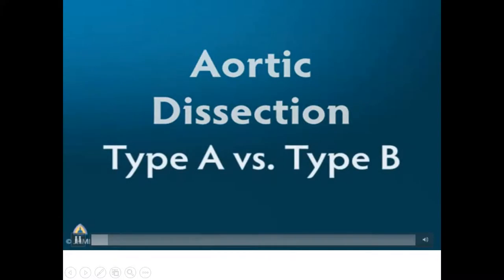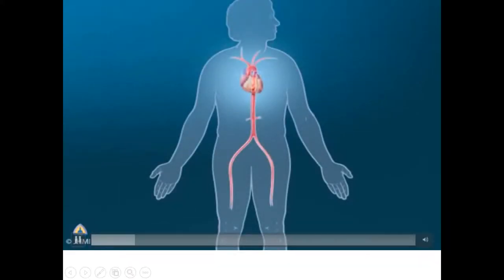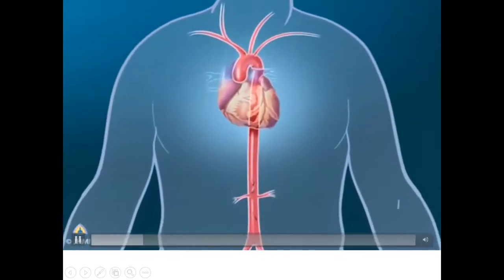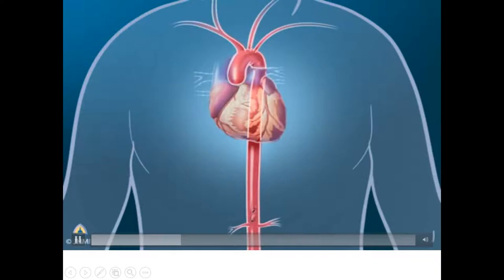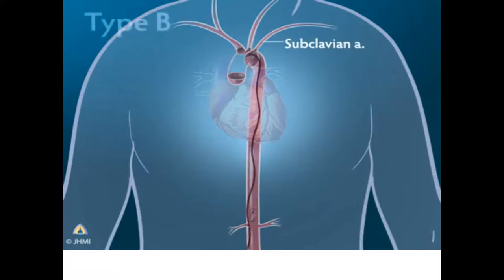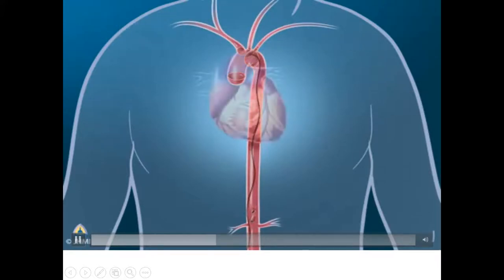This important section will explain Type A versus Type B aortic dissection. You can see the heart and the aorta. Going closer, we see the sinotubular junction — this is where the ascending aorta starts. For Type B dissection, it starts distal to the left subclavian artery, meaning from the descending aorta.